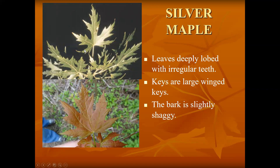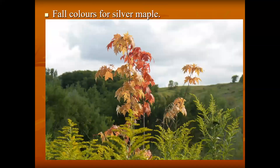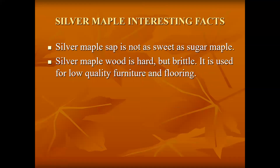Silver maple has deep lobes — you can easily count one, two, three, four, five sections. Silver maple trees provide good protection for birds such as the yellow warbler. Fall colors can be yellow or red, but not normally as bright as the red maple or the sugar maple.